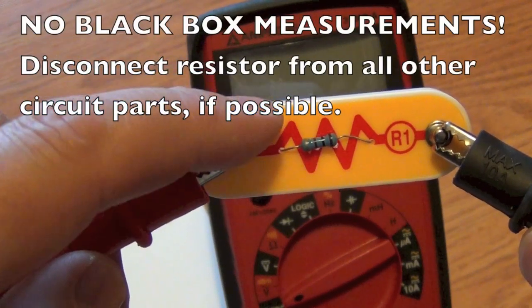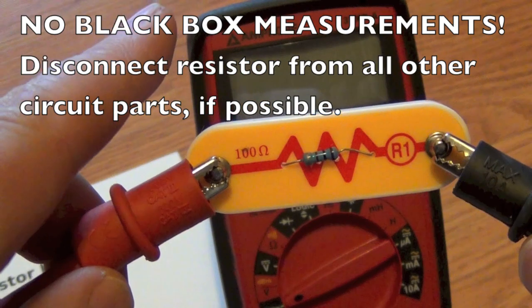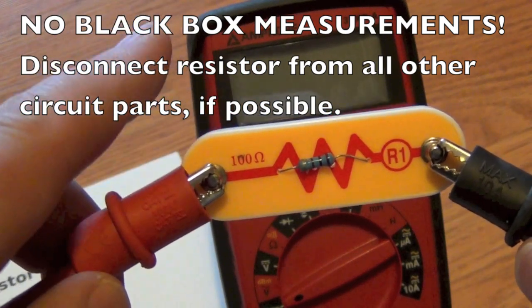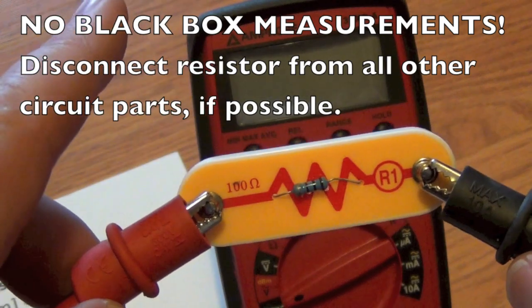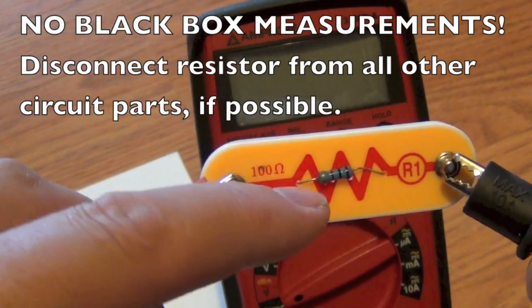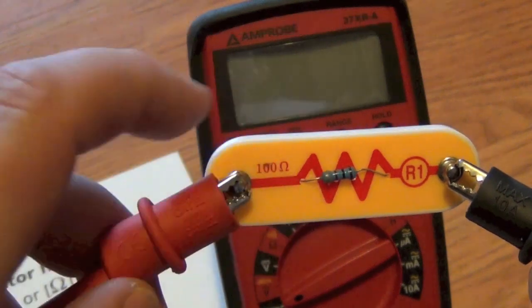Secondly, make sure this resistor is not connected to other things. We call that a black box measurement, and you would not want to be measuring the resistance of something else that you're not aware of. Make sure you isolate the resistor.